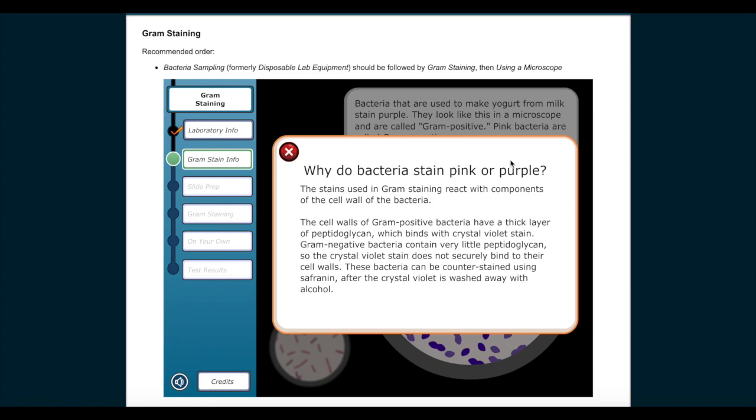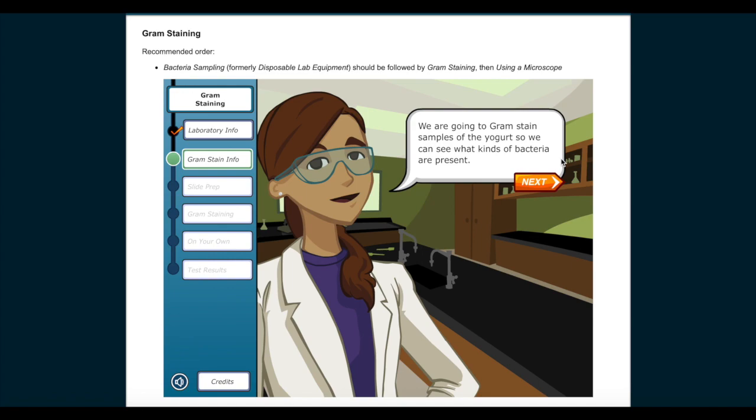Why do bacteria stain pink or purple? The stains used in Gram staining react with components of the cell wall of the bacteria. The cell walls of Gram positive bacteria have a thick layer of peptidoglycan, which binds with crystal violet stain. Gram negative bacteria contain very little peptidoglycan, so the crystal violet stain does not securely bind to their cell walls. These bacteria can be counterstained using safranine after the crystal violet is washed away with alcohol.